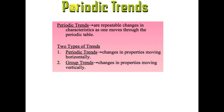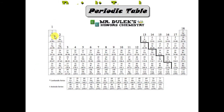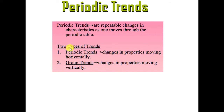Today we're going to look at periodic trends. Periodic trends are a way of looking at the overall change in electron configurations as we progress on the periodic table — how we move from element to element. We'll compare hydrogen to helium, to lithium, and to all other elements to see how things change. Trends are changes that happen as you move across the periodic table. There are two types: periodic trends and group trends.